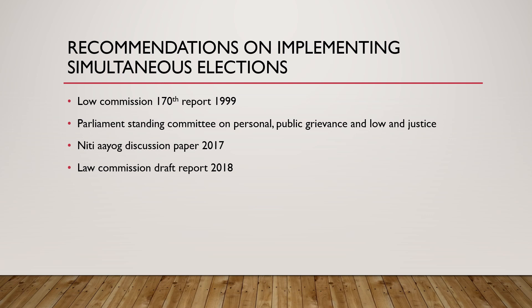The Law Commission draft report of 2018 gave a framework for synchronization of elections with three options. Option one: advancing or postponing election timings in certain states so that elections to all state assemblies and Lok Sabha can be held together. Option two: conducting elections only twice in five years. Option three: conducting all elections falling in a calendar year together. Regarding no-confidence motions, it said to replace the no-confidence motion with a constructive vote of no-confidence through appropriate amendments.